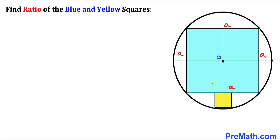Now let's focus on the yellow square and label its side length. I'm going to call each side lowercase b. Since all side lengths are equal, every side of the yellow square is b across the board.